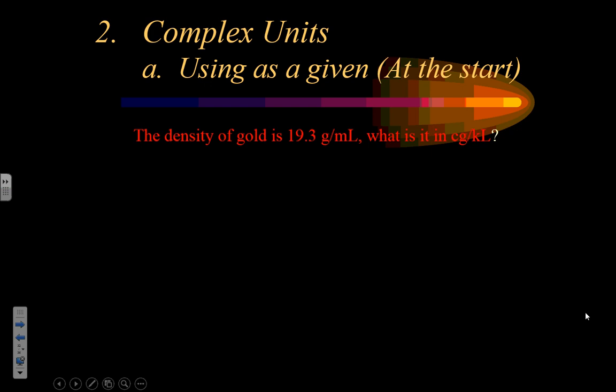The first type of problem is when we start with the complex unit as our given. The density of gold is 19.3 grams per milliliter — what is it in centigrams per kiloliter? We don't have any other number information, so we start with our complex unit. First, remember: whenever you see a complex unit, cross it off and write it as an equality, because in that form it's easier to see how to use it as a ratio — either at the start or middle of a problem.